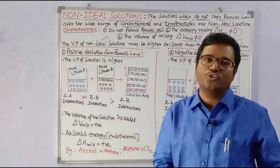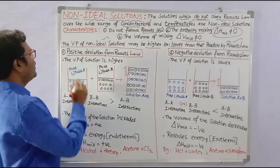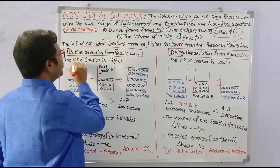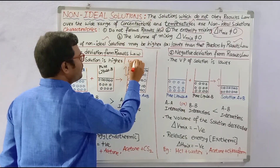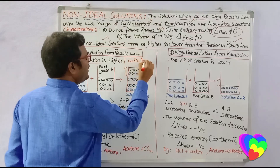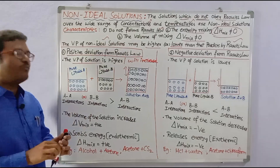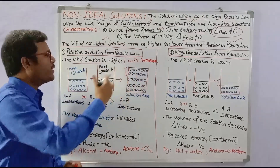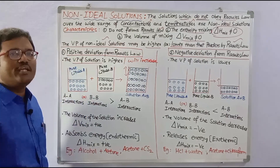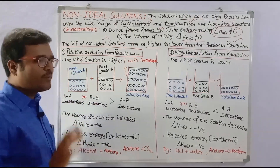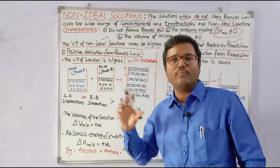In positive deviation from Raoult's law, the vapor pressure of the solution will increase — it will be higher than predicted. That is positive deviation from Raoult's law.